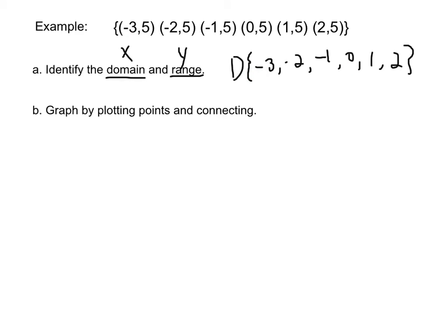Next, for our range values, we have 5. Because each ordered pair has 5 as a y value, we only write it once.